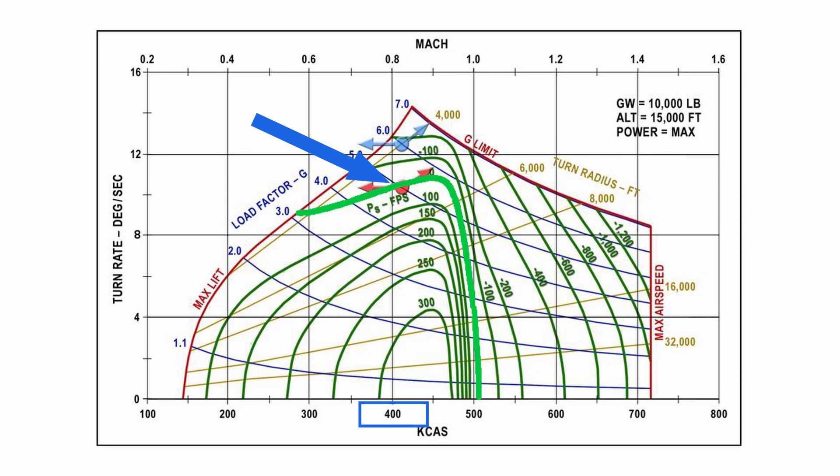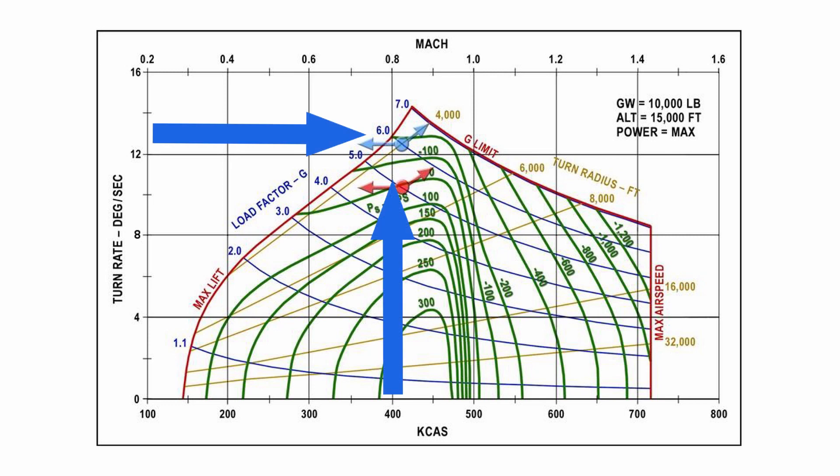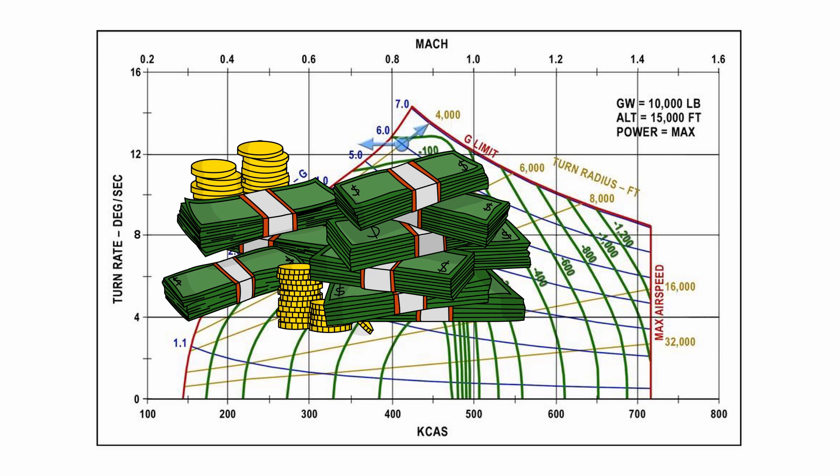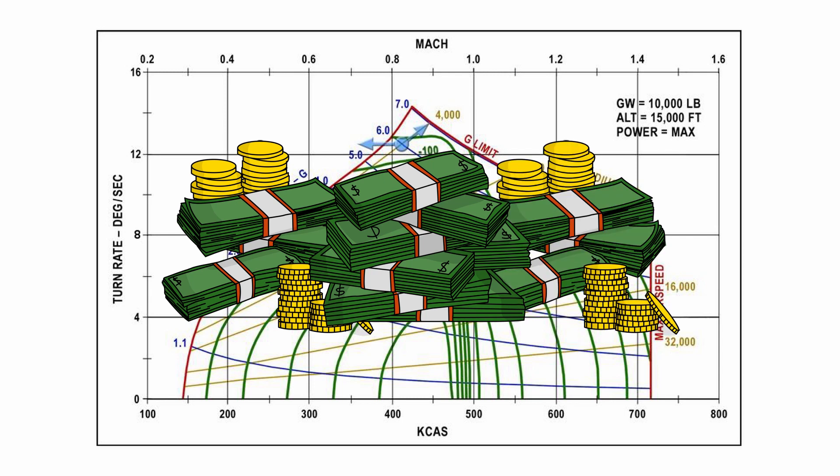In that case, the bandit would have a slight edge with 10 degrees per second of turn and a whopping 400 knots of speed. That extra speed could be cashed in for a temporary rate boost at 13 degrees per second if an opportunity for a shot presented itself. And that's just one example of how two fighters can start without any advantage but one can get ahead by managing energy well. Remember to treat energy like money. You want to build it or maintain it until you have a reason to spend it. So don't spend it frivolously.